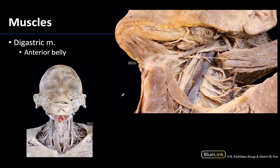This muscle, like the omohyoid, has two bellies, but instead they are called anterior and posterior. Here is the anterior belly of the digastric, this is its intermediate tendon, and this will be the posterior belly of the digastric. We will return to this muscle in session five when discussing the submandibular triangle — here's your submandibular gland right there — and we'll also return to it in the oral cavity session.